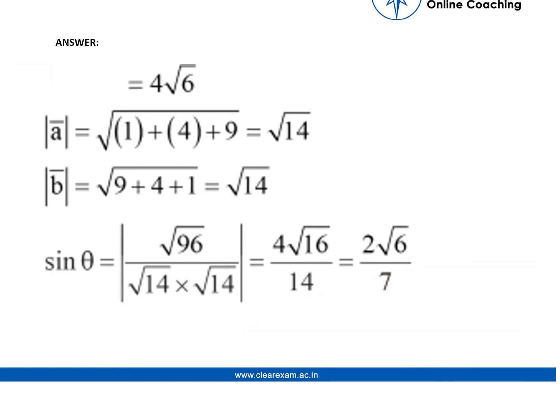Modulus of a vector is root 14 and modulus of b vector is root 14. That is the scalar value of b vector.